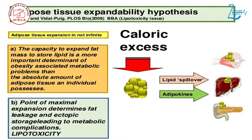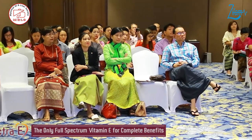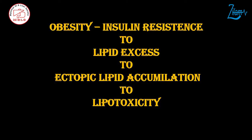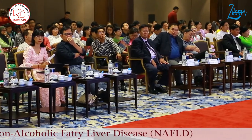The main etiology of metabolic syndrome is a problem with the adipose tissue, because our adipose tissue has a limited capacity to expand. Once that limit is reached, it becomes a problem. Obesity and insulin resistance lead to lipid excess, causing ectopic lipid accumulation in organs other than adipose tissue — the liver, muscles, pancreas — wherever lipids accumulate, leading to lipotoxicity.